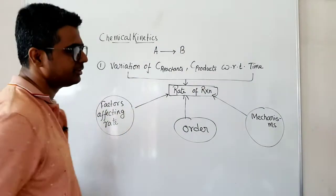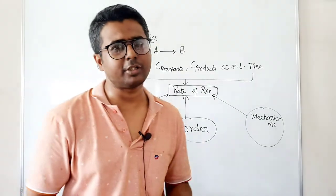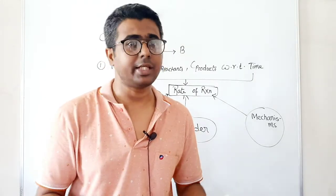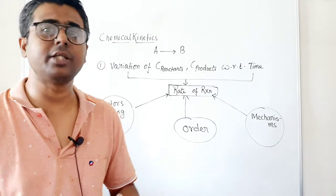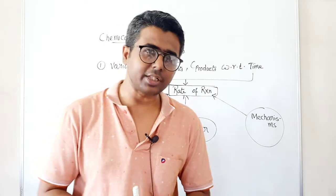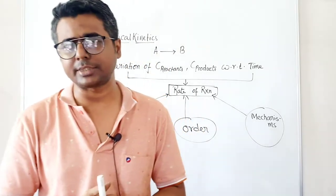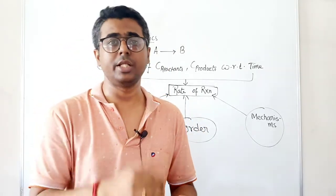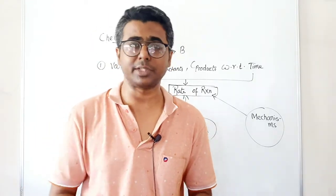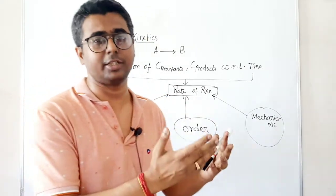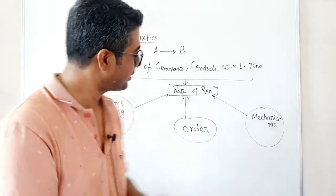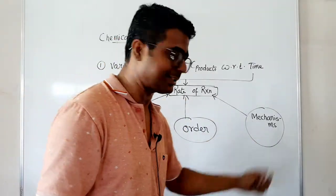We will also study the factors that affect the rate of reaction. For example, a solid reacts slowly, a liquid reacts faster, and a gas may react faster or slower depending on what it is reacting with. Temperature and pressure also affect reactions — some reactions run smoothly at low pressure or temperature, while others require higher conditions. In this chapter we will study how and why these factors affect the rate.